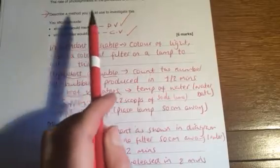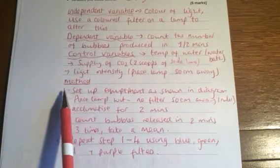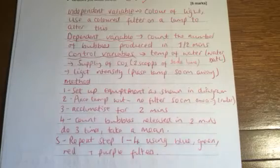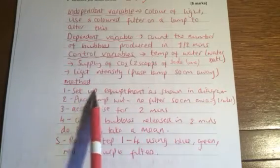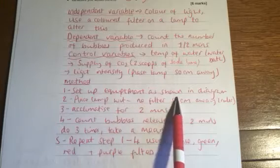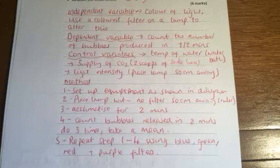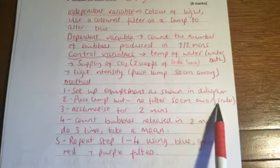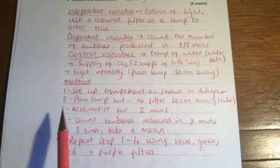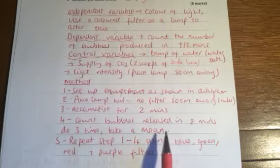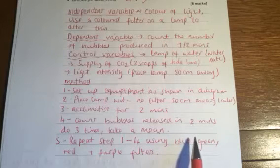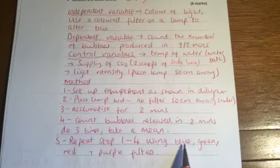So already I've covered the bits that they want me to cover here. But what I haven't done is described a method. So here is my method. It should never be longer than four or five steps. They've given you a picture and you can just say set up the equipment as shown in the diagram. I then need to place my lamp. Initially I'm going to use no filter 50 centimetres away from the lamp and I'm going to use a ruler to measure that. Sounds really obvious but do write things like this in because they want to know how you're taking your measurements. I'm going to let the pondweed settle or acclimatise for two minutes. Then I'm going to count the number of bubbles released in two minutes. And I might do this a further three times so that I can take a mean.